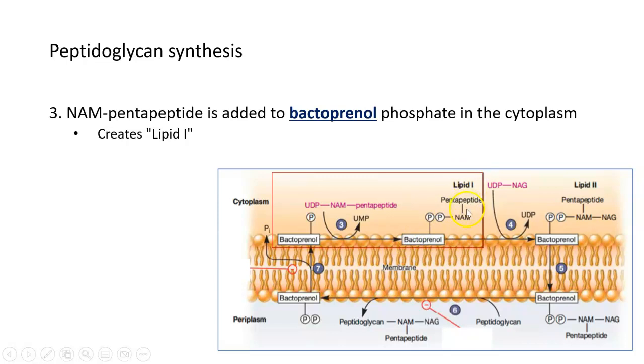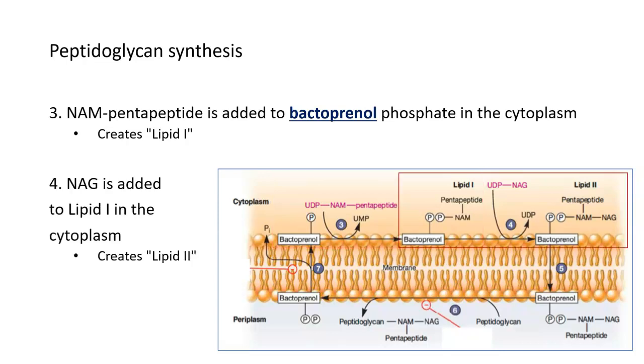So you've got NAM pentapeptide. But now you need to add the NAG to it. Because every peptidoglycan subunit needs both sugars as well as the peptide. And so in the next step here, lipid 1 becomes lipid 2. And the way that this happens is by NAG being added to the structure over here. So NAM, peptide, and bactoprenol in lipid 1. And now NAG is being added to this molecule, which is still attached to bactoprenol. And it becomes lipid 2.